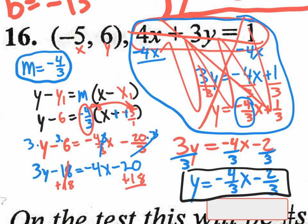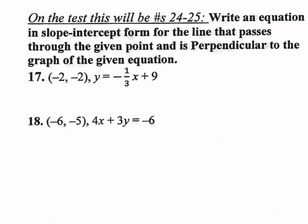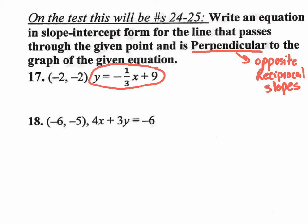The final section: they give a point and say the line is perpendicular to the given equation. Remember, perpendicular means opposite reciprocal slopes — change the sign and flip the fraction. The given slope is -1/3. Flip it to get 3/1 and change the sign to positive, so the slope is +3.